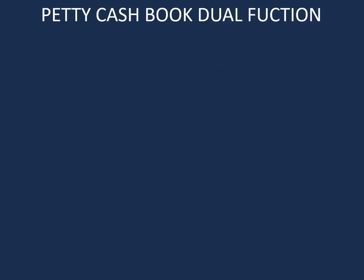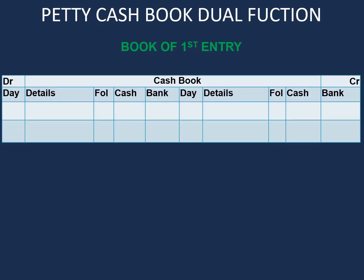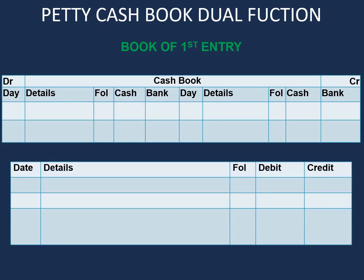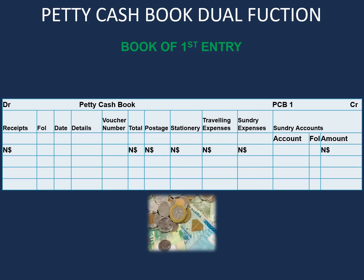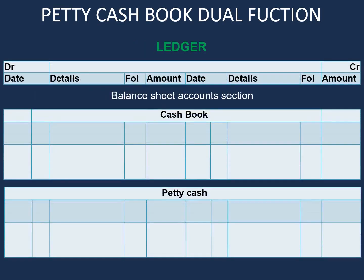Now let's have a look at the dual function of the petty cash book. Just like our cash book and our general journal, the petty cash book is also a book of first entry. In this book of first entry we only record small transactions which are paid with notes and coins. In our general ledger we will have an account for the cash book and an account for petty cash. If we were to top up our petty cash, we will credit our cash book and debit our petty cash to complete the double entry process. This is the dual function of the petty cash book.